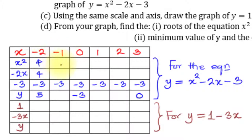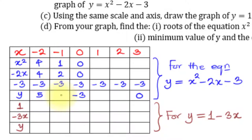When x = -1: x² = 1 (since (-1)² = 1, the negative signs multiply to positive), and -2x = -2 × -1 = +2. When x = 0: x² = 0, -2x = 0, and the constant -3 remains, so y = -3. Adding 1 + 2 - 3 = 0 confirms the value for x = -1.